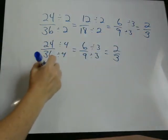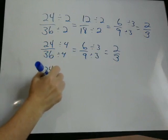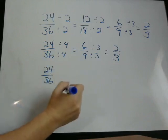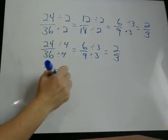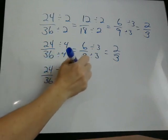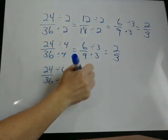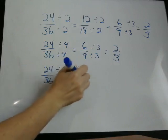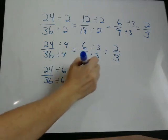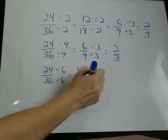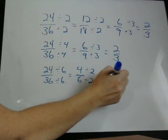We could have also recognized that they can be divided by 6. We would have gotten 4 sixths. That can be divided by 2. And again, we get the same answer. So there's multiple ways to do this.